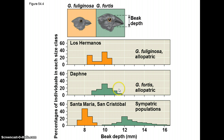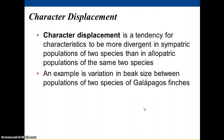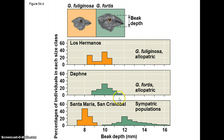On islands where these two species live together, you can see their beak sizes shift apart. One species' beak size shifts down to be smaller, and the other becomes larger — that is, there's character displacement. This character is modified when the two species live together sympatrically, presumably to avoid competition. There is selection for one to have a smaller-sized beak and the other to have a larger-sized beak.